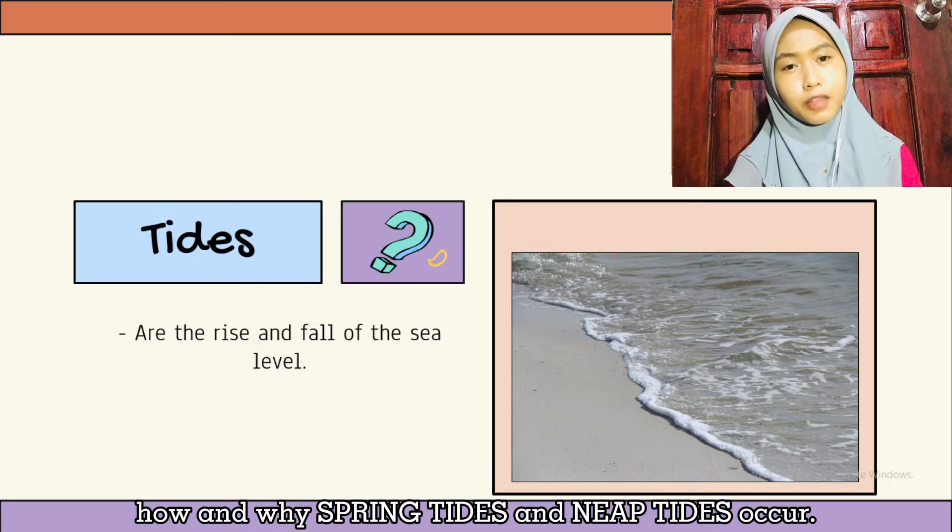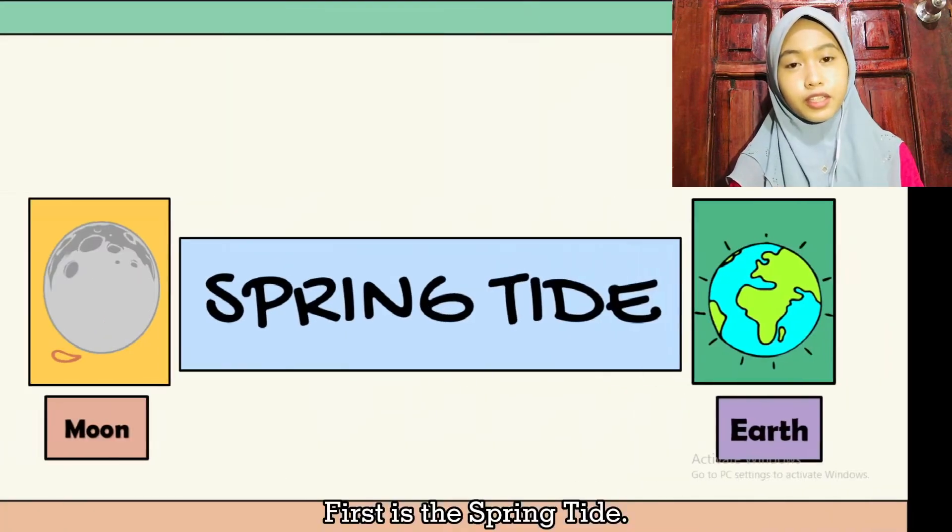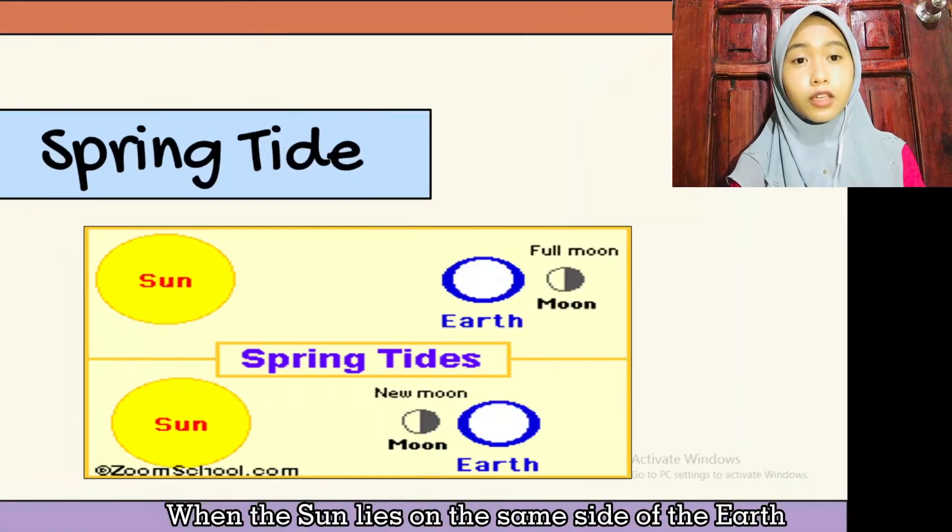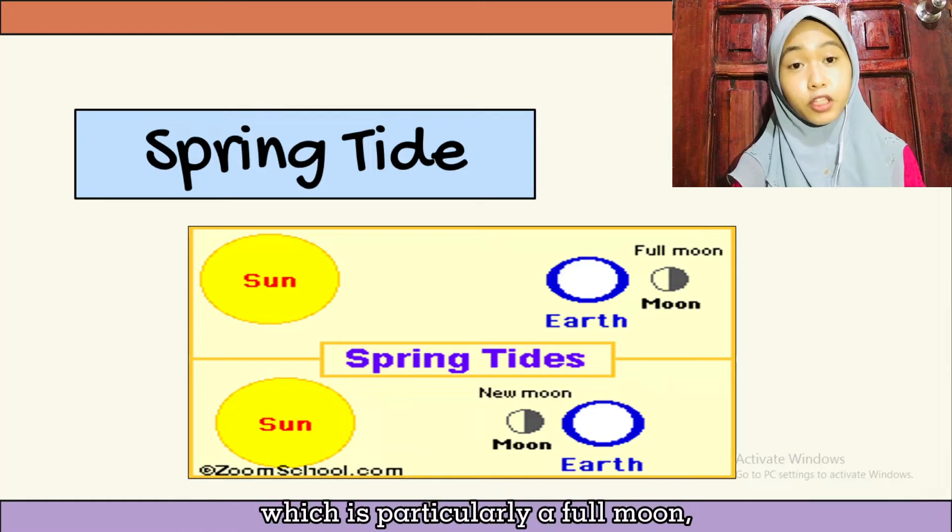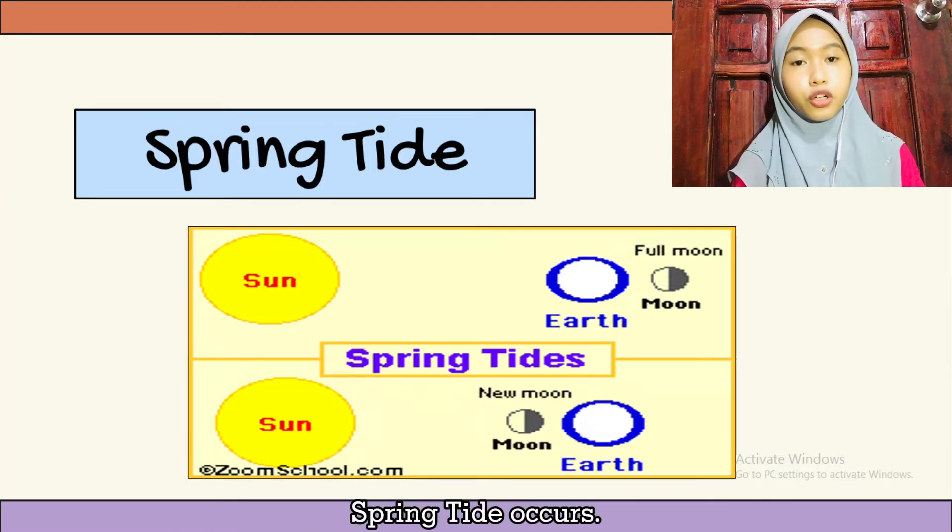First is spring tide. When the Sun lies on the same side of the Earth as the Moon, or on either side opposite to the Moon, which is particularly during a full moon, spring tide occurs.